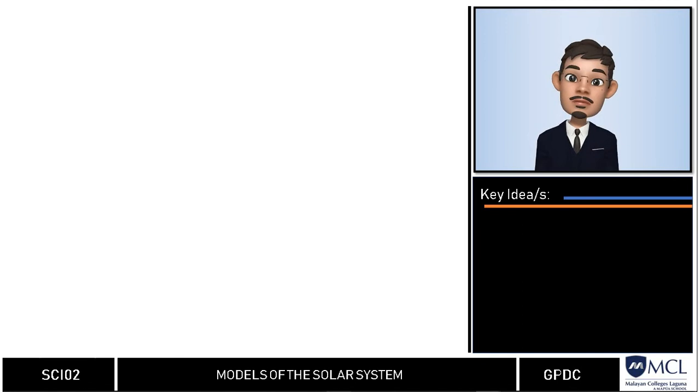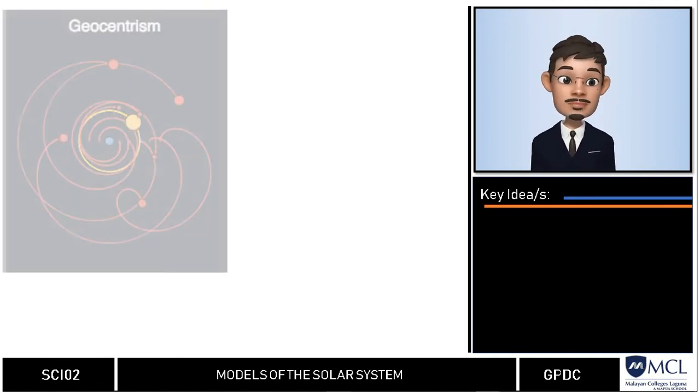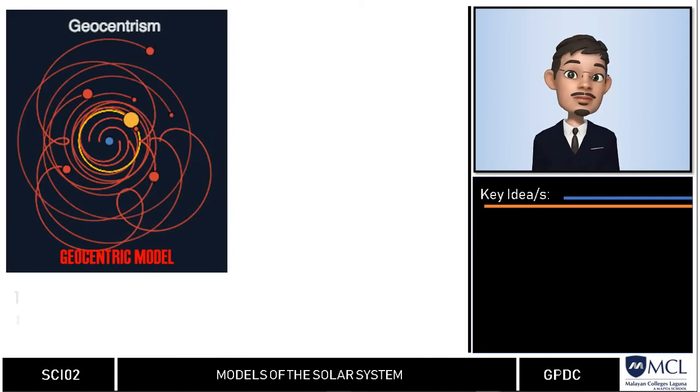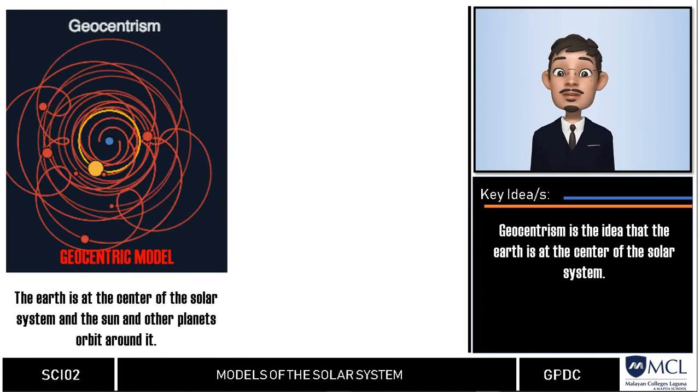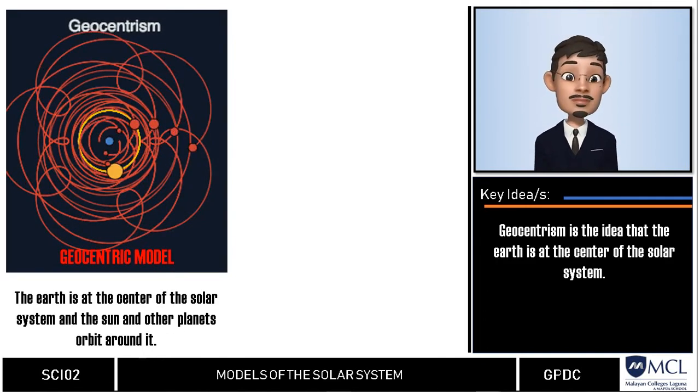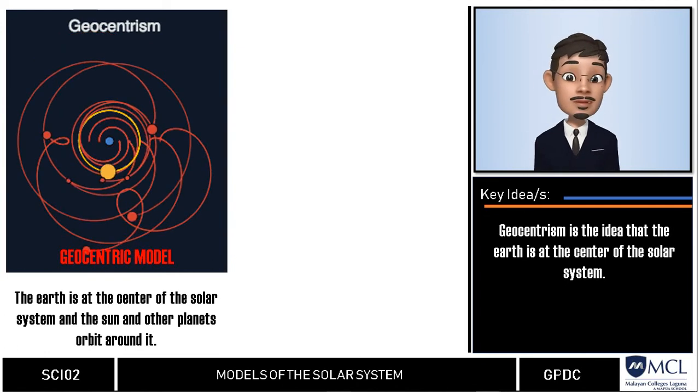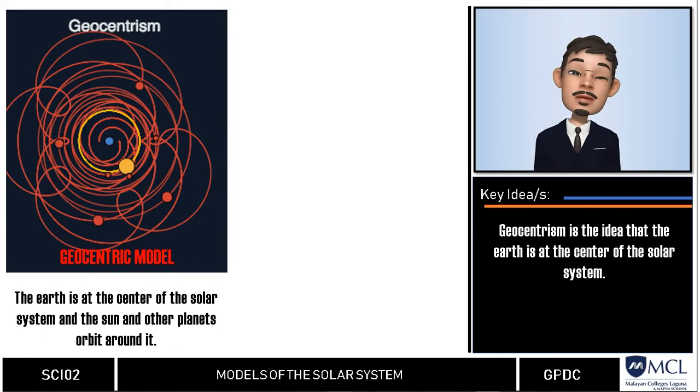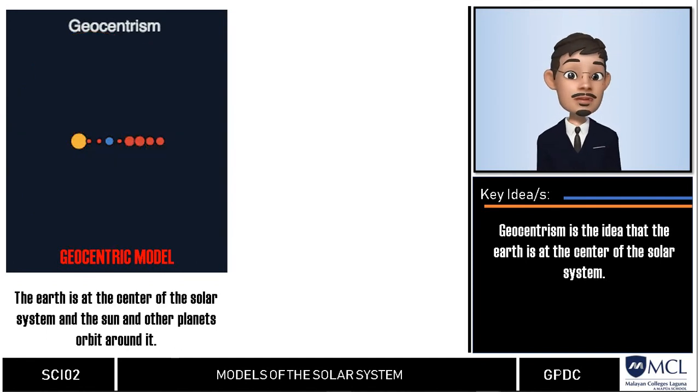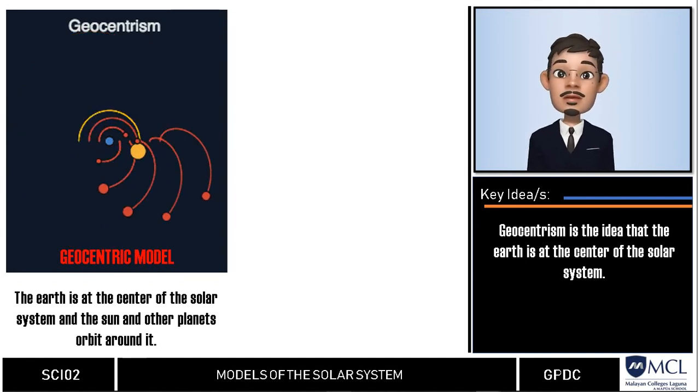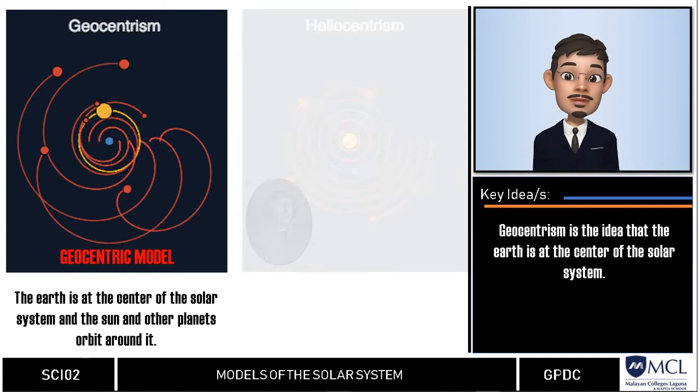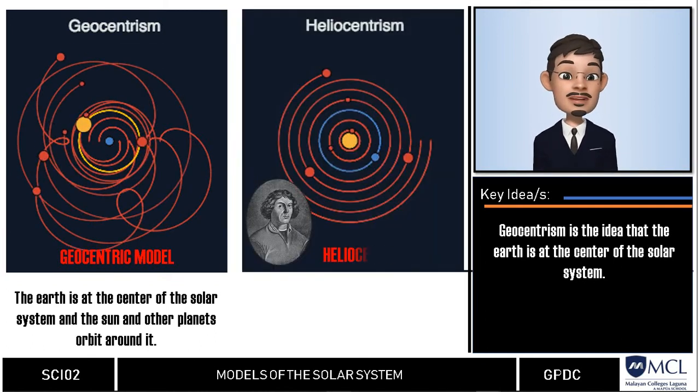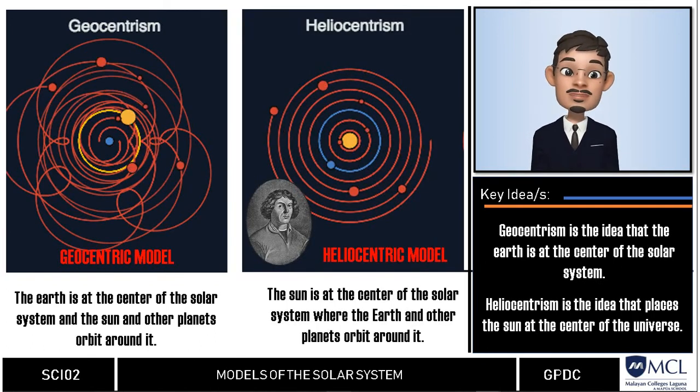Now at this part of the video we will track the progress of different models of the universe throughout time. The most revealing model during this time was the geocentric model, and it remained accepted for over 2,000 years. The geocentric model places the earth at the center of the solar system and the sun together with the other planets are orbiting around it. This belief was contradicted by Nicolas Copernicus who suggested that the sun is the center of the solar system.